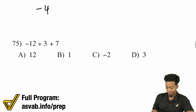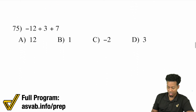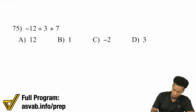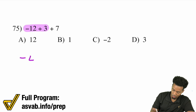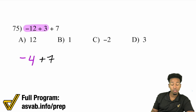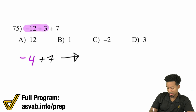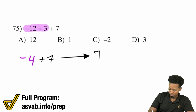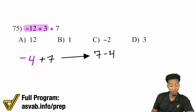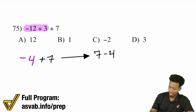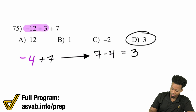Number 75, and we'll call it a day: negative 12 divided by 3 plus 7. We'll do division first — a negative divided by a positive is a negative. 12 divided by 3 is 4. Then we add 7. Negative 4 plus 7 is the same exact thing as saying 7 minus 4 — that's going to give you 3. And that's D.